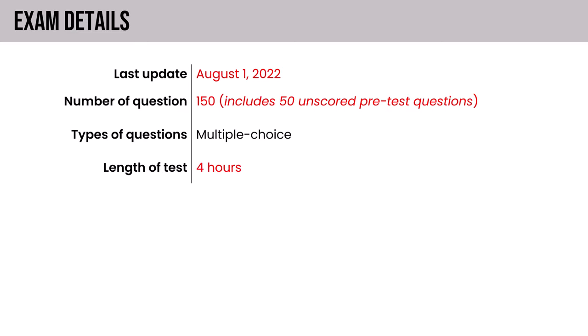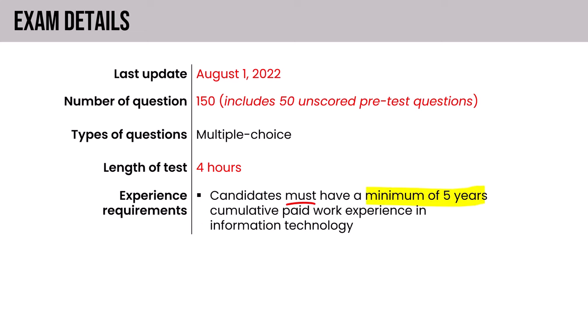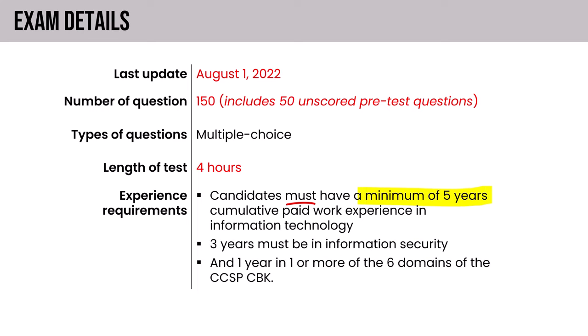This is a multiple choice exam, four hours in length. It used to be three hours, but when ISC Squared added the extra questions, they added an hour to the allotted time. In terms of experience, candidates must have a minimum of five years cumulative paid work experience in information technology, three years in information security, and one year or more in one of the six domains of the CCSP common body of knowledge.